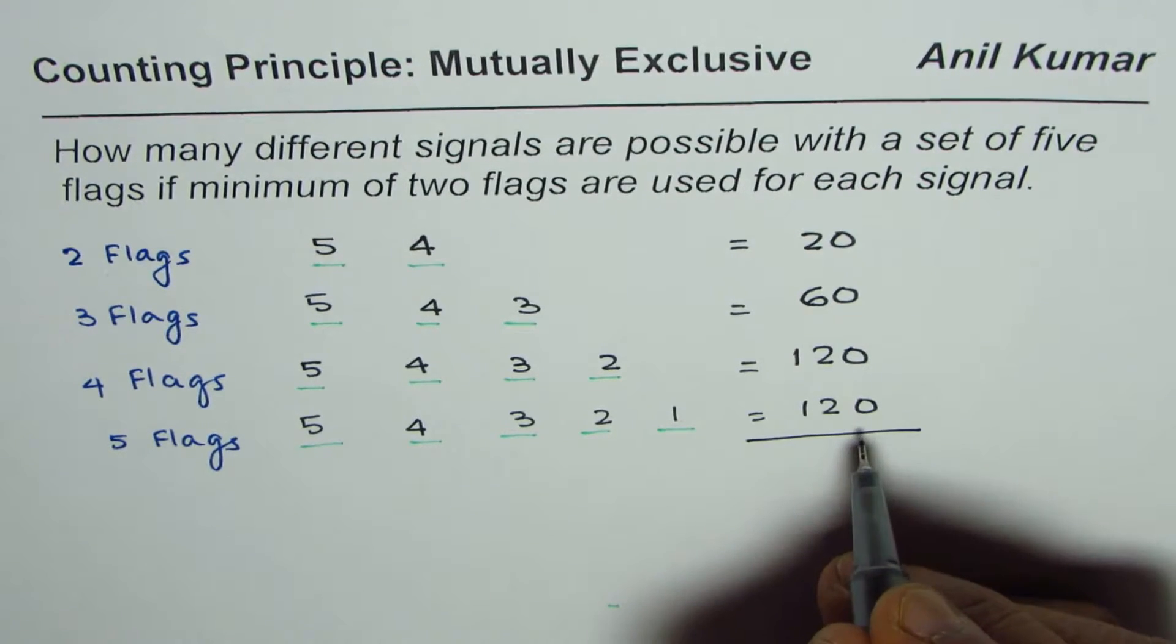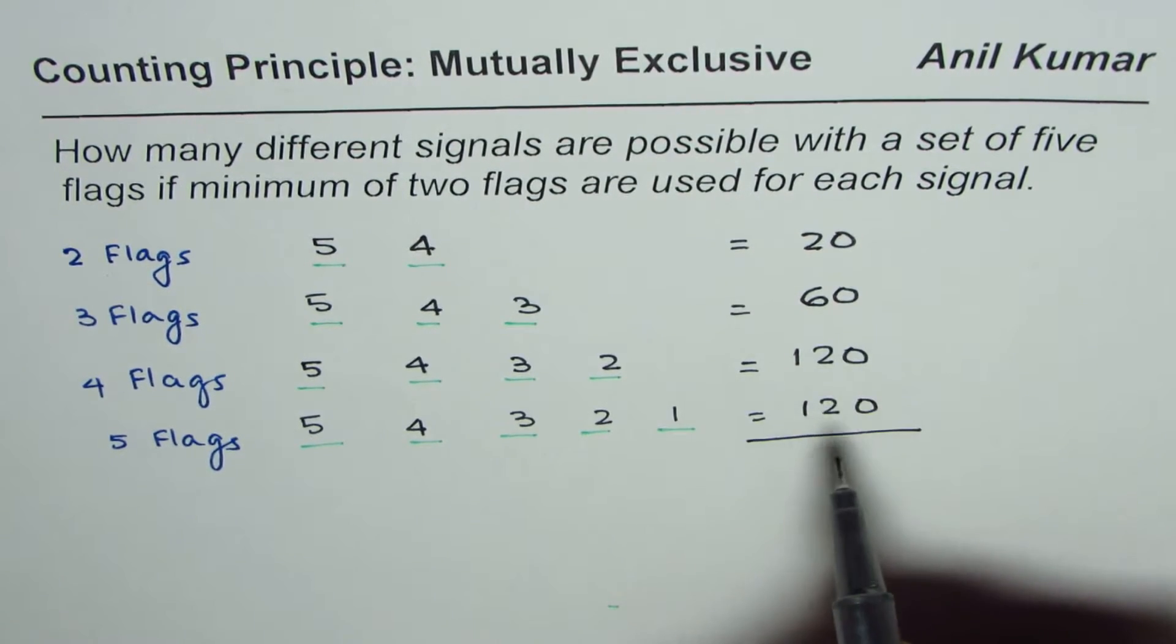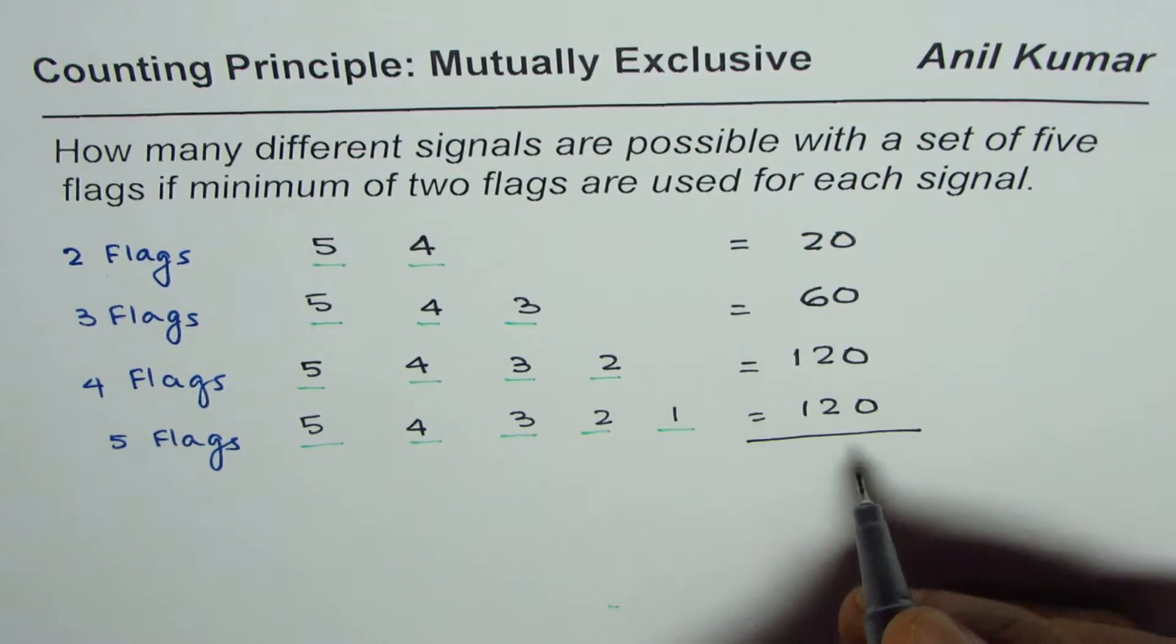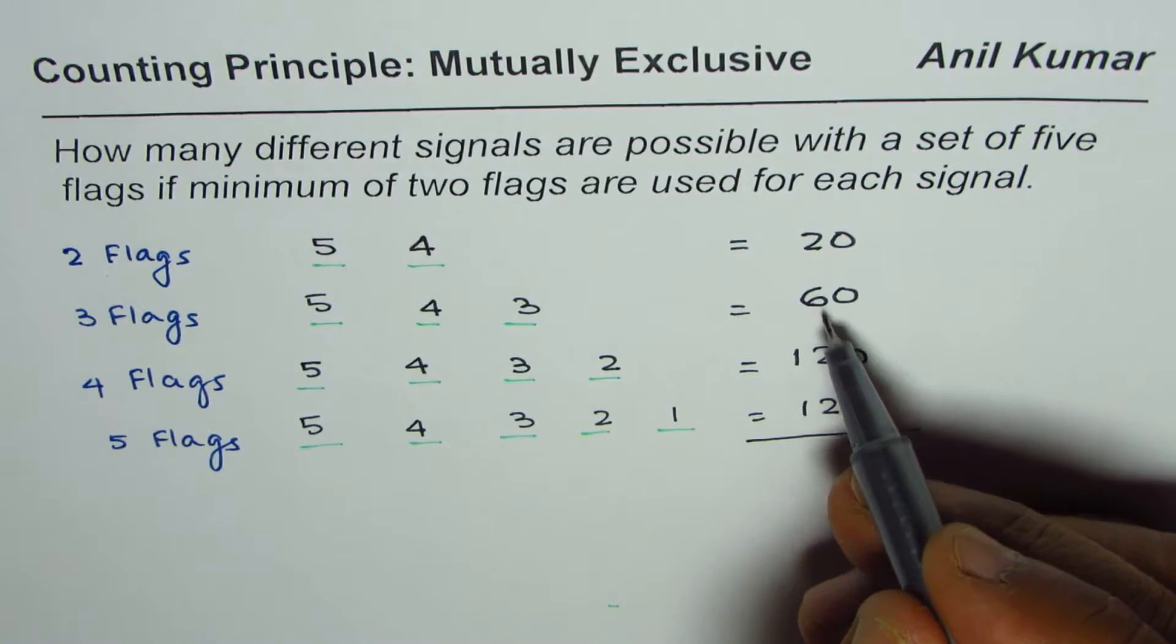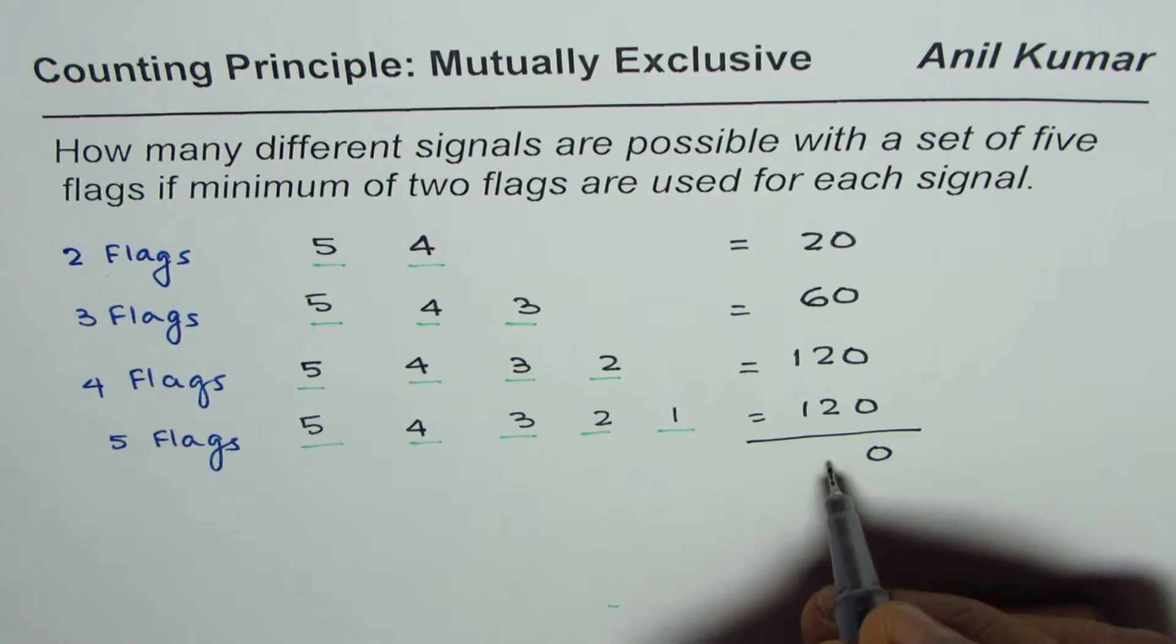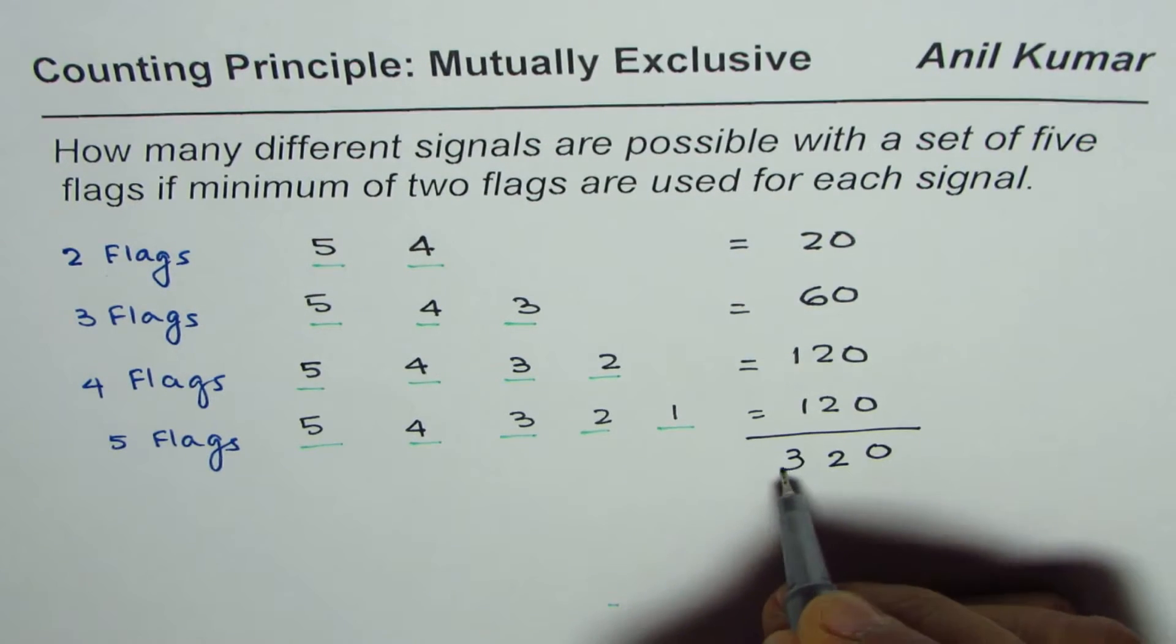Once you add them up, you get all possible signals. So once you add them up to get 20 plus 60, 120, 120, that's 320.